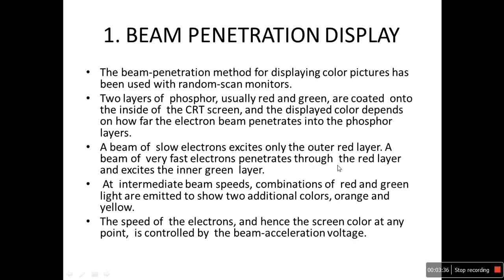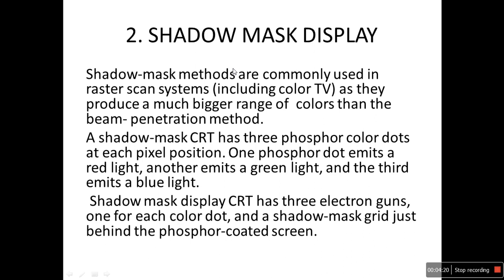When the electrons are slow, red color is displayed. A beam of very fast electrons penetrates through the red layer and excites the inner green layer. At intermediate beam speeds, a combination of red and green lights are emitted to show two additional colors — orange and yellow. The speed of the electron, and hence the screen color, is controlled by the beam acceleration voltage.